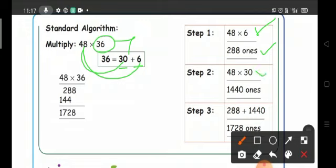Then 48 times 30, we get the answer 1440 ones. So 48 times 6 equals 288 and 48 times 30. Here there is no need to put 0 in this place.